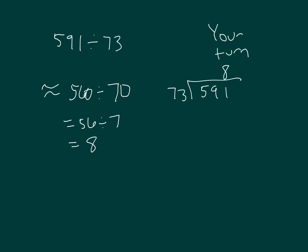8 times 3 is 24, regroup of 2. 8 times 7 is 56, plus 2 is 58. So yes, that's a good estimate to help with our solution. 73 times 8: regroup of 2, 8 times 7 is 56, plus 2 is 58. And then add back in the remainder of 7, so we get to our original dividend, which was 591.